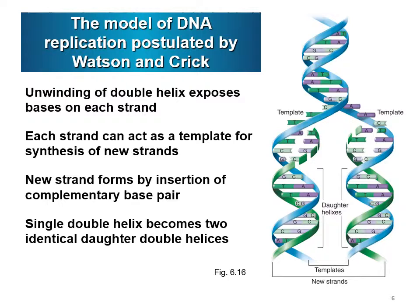In order for DNA to be replicated, first unwinding of the double helix must take place, which exposes bases on each strand so each strand becomes a template for synthesizing new DNA. Complementary bases are added, and each strand serves as a template on both sides, so a single double helix becomes two identical daughter double helixes.